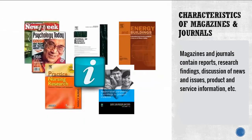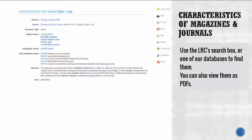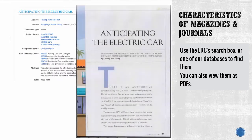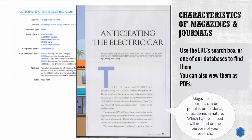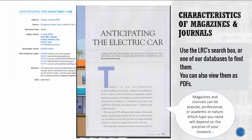What about the characteristics of magazines and journals? Magazines and journals contain reports, research findings, discussion of news and issues, product and service information, etc. To find magazines and journals, use the search box on the library's homepage or search a specific database, and often view articles as PDFs. Magazines and journals can be popular, professional, or academic in nature.